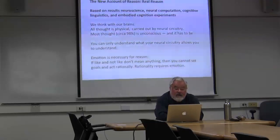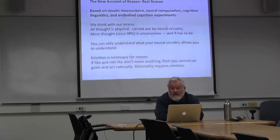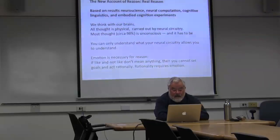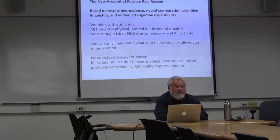Damasio looked at people who had brain injuries and strokes who could not feel and didn't have emotion. In that case, like and not like don't mean anything — you cannot set goals and act rationally if you don't know what would be good or bad. People who have those brain injuries act randomly and mess up their lives. Rationality therefore requires emotion in order to set goals.